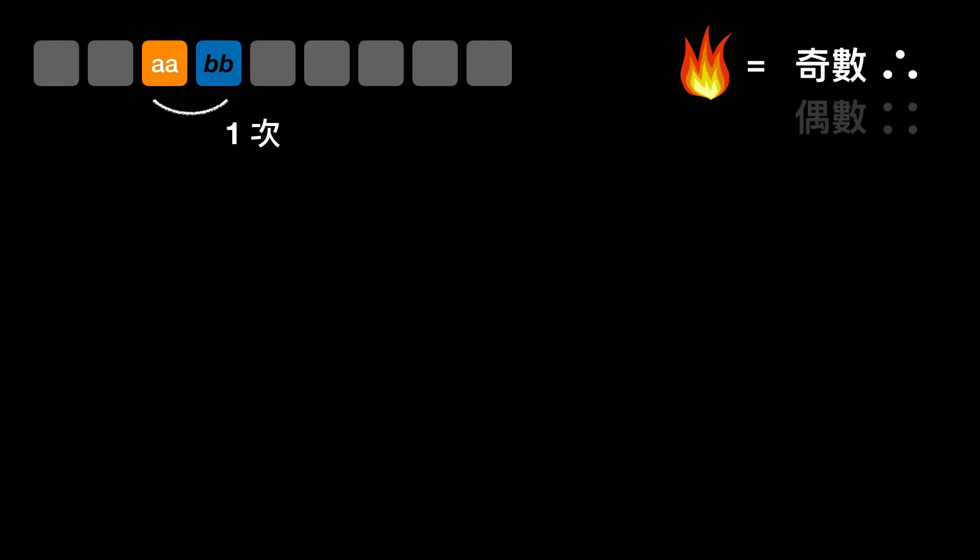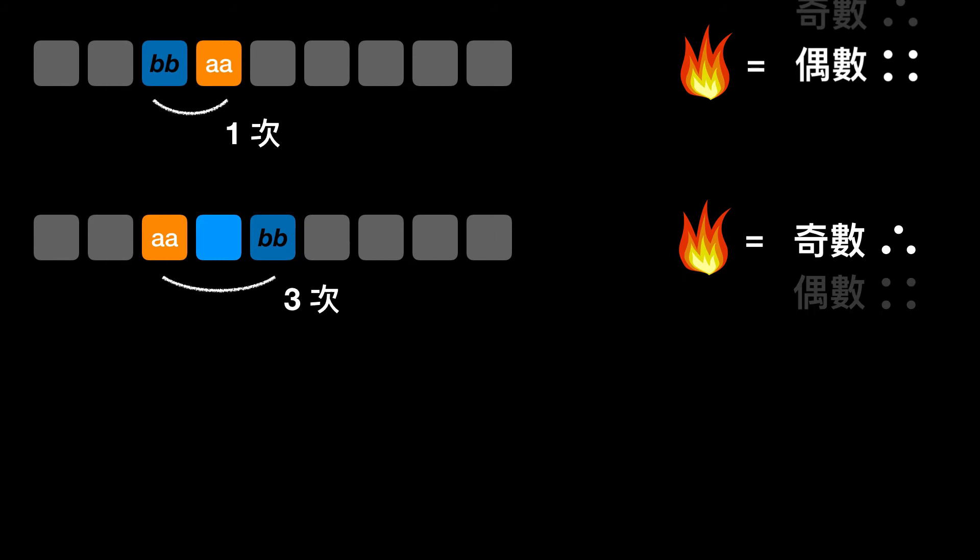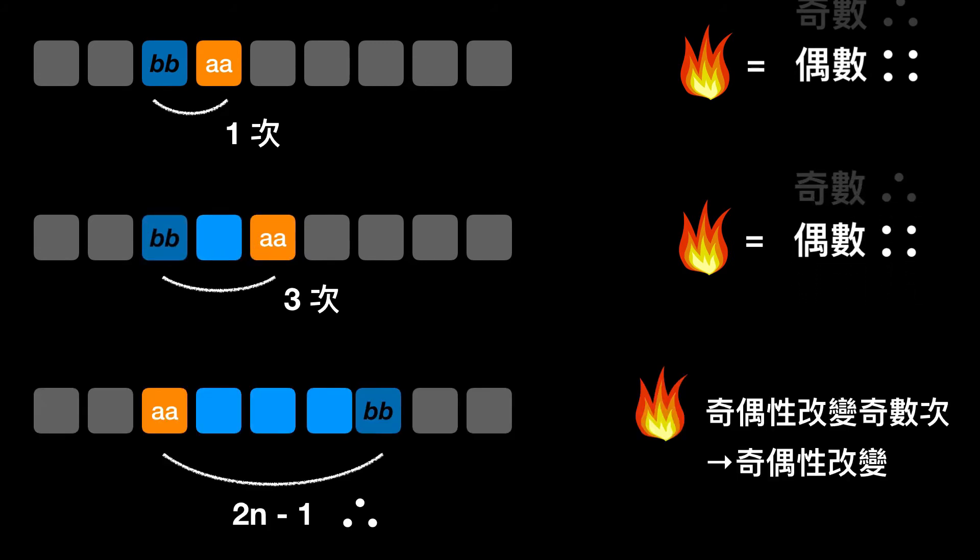So when any two numbers swap, depending on how far they are apart, it could be 1 adjacent swap, or 3 adjacent swaps, or 5 adjacent swaps, the amount of swaps will be an odd number. After odd times of plus 1 or minus 1, the parity will change. Odd becomes even, even becomes odd.